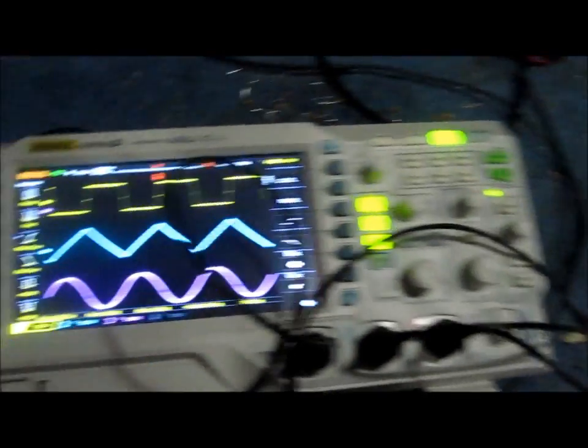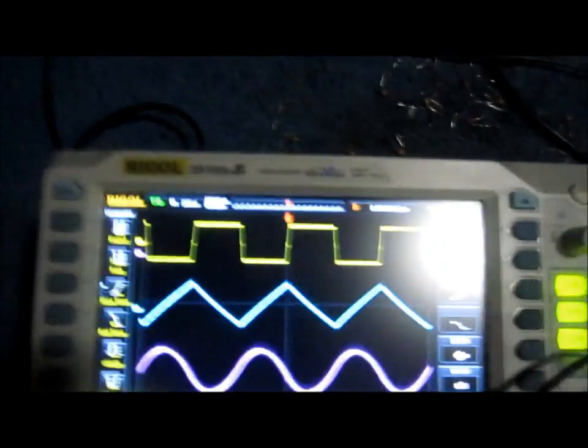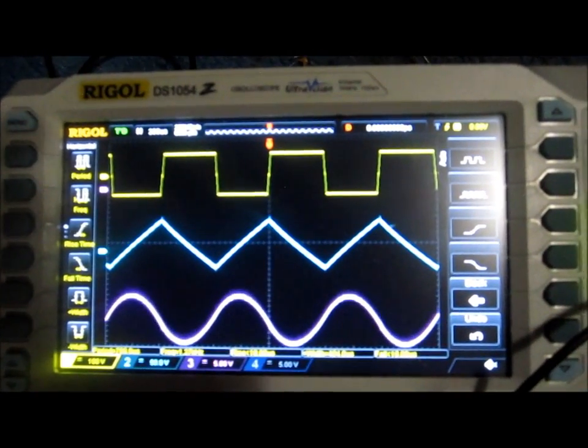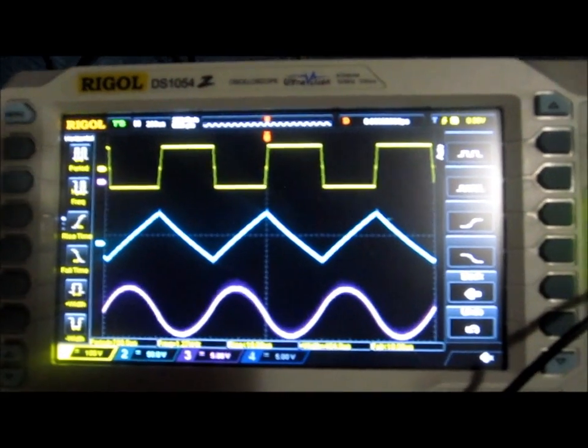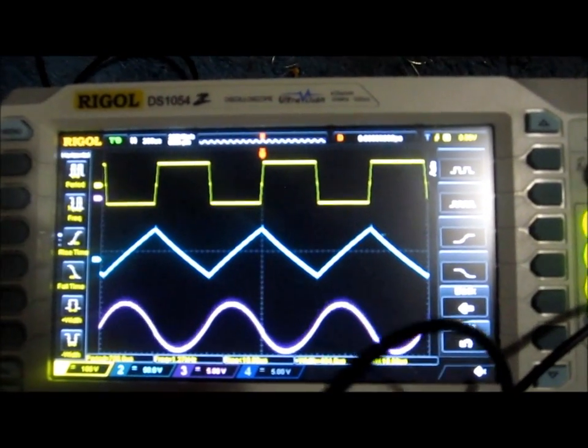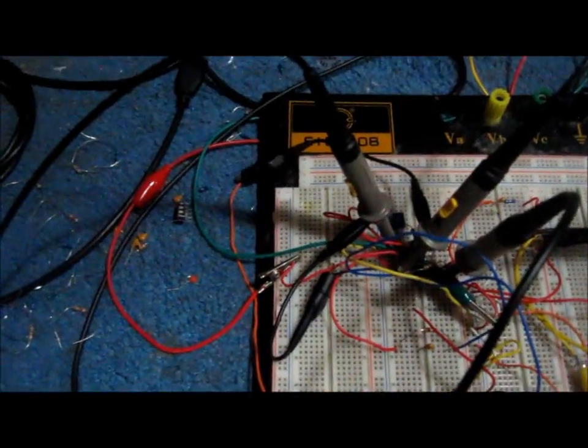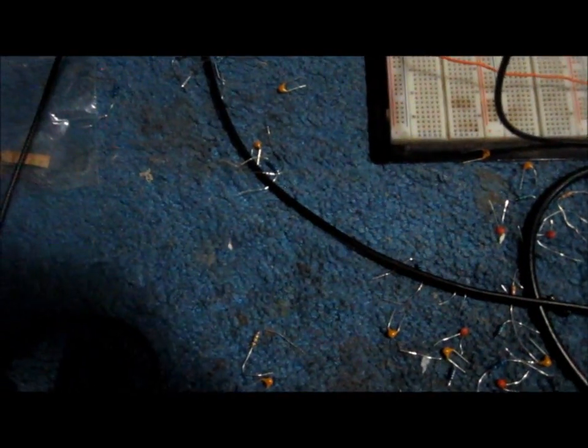Now looking at the oscilloscope, these are our three waveforms: square, triangle, and sine. Right here on this board we have the 100k potentiometer. I'm going to adjust it so you can see how the waveform changes on the oscilloscope.